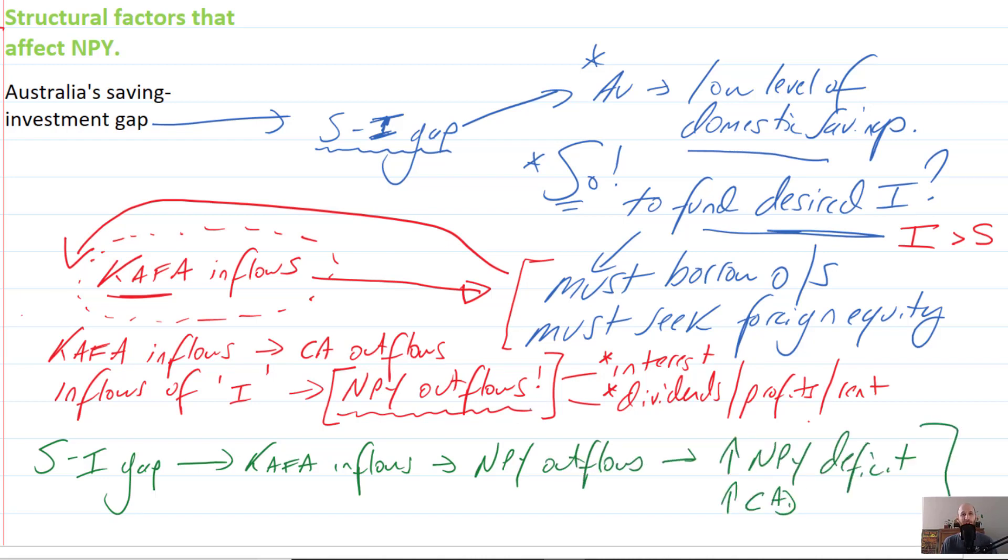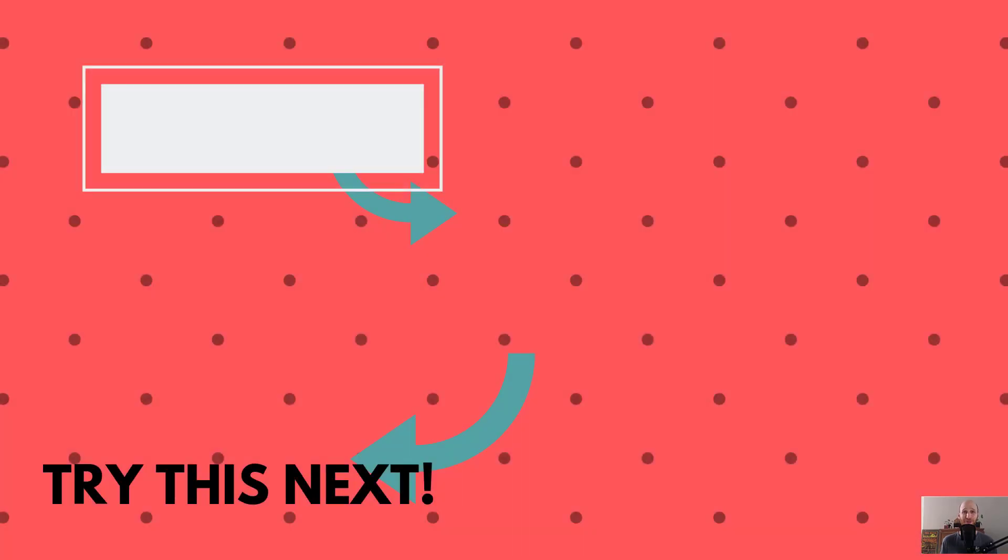So the very situation of the savings-investment gap creates the need for capital and financial account inflows, which creates NPY outflows, which will then increase the NPY deficit, which could then increase the current account deficit. So the situation of the savings-investment gap is the structural factor that creates NPY outflows.